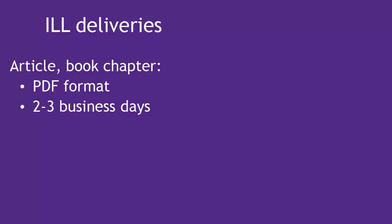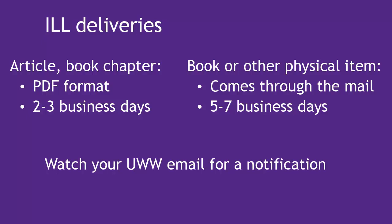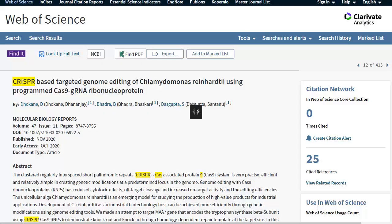An article or book chapter will be delivered in PDF form within a few days. If it's a physical item that you'd like to request, like a book or DVD, that comes through the postal service, and normal delivery times are more like 5 to 7 business days. In either case, watch for an email notification in your UWW email account.